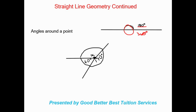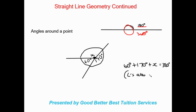So looking at this, if I wanted to work it out, I'd write: 60 degrees plus 170 degrees plus x equals 360 degrees. The reason is angles around a point — or you could also say a revolution, which is another way of saying it's a full circle equal to 360 degrees. Then you'd solve for x from there.